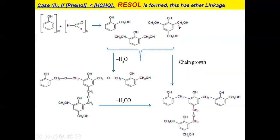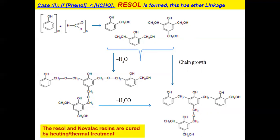Because of the presence of methylene groups in all three directions, Resol forms a three-dimensional network, less linear than novolac. Bakelite can be prepared based on requirements — whether you want a linear or 3D network — by optimizing the composition of phenol and formaldehyde. You can prepare novolac or Resol, and that combination can yield bakelite. Unlike epoxy resin where amines are used as curing agents, in the case of Bakelite, novolac or Resol simply undergo 3D cross-linking by heating (thermal treatment). Therefore, it is called a thermosetting polymer.